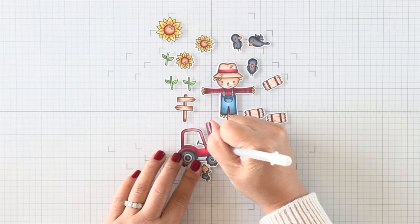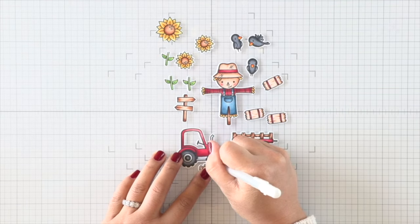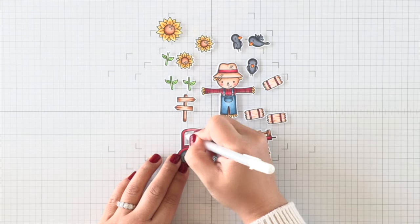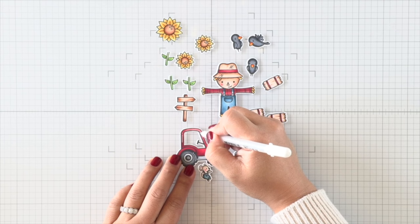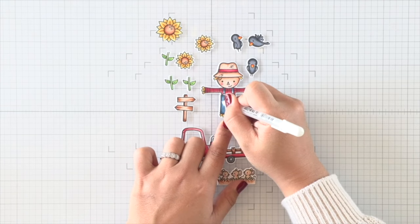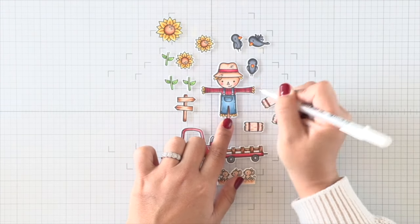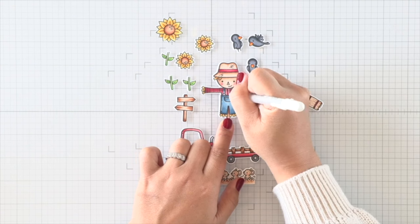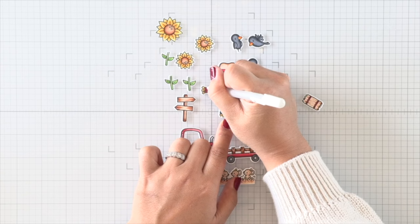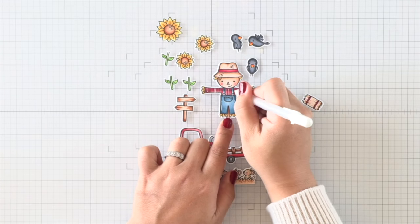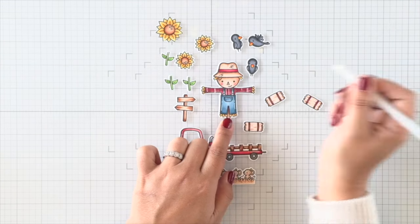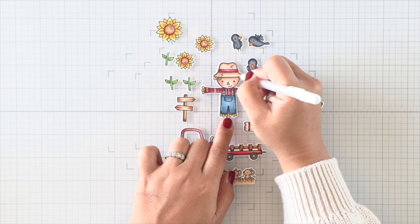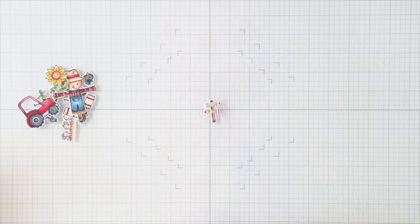And then I'll die cut all of the images off camera. Once everything is die cut, I can go in with a jelly roll pen and just add some white highlights everywhere. I like to do this after die cutting because sometimes I find that that white jelly roll, if it's not dry, will transfer onto my cutting plates, so I like to do it after.